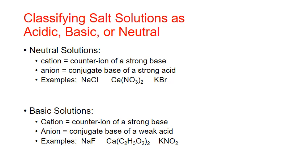A basic solution will occur when the cation is the counter ion of a strong base, but the anion is the conjugate base of a weak acid. In this scenario, the anion of the salt is considered a weak base, and it will turn the solution basic. Sodium fluoride is a great example — sodium is the counter ion of a strong base and is considered neutral by itself, while fluoride ion is the conjugate base of the weak acid HF, or hydrofluoric acid, and is therefore basic. Other good examples with anions that are conjugate bases of weak acids include calcium acetate and potassium nitrite.